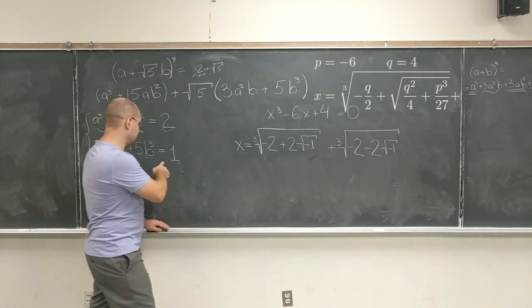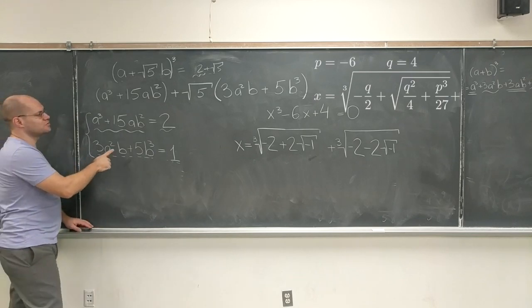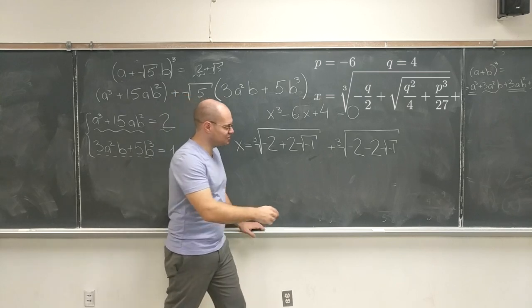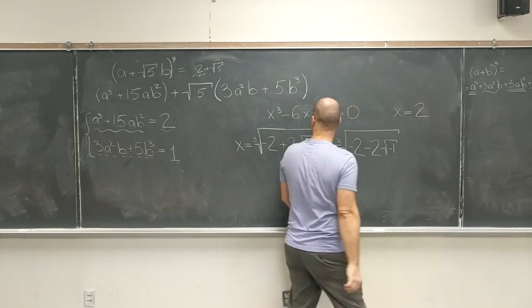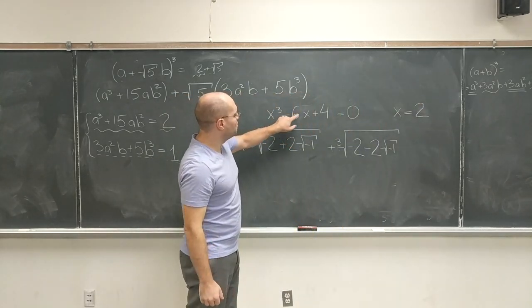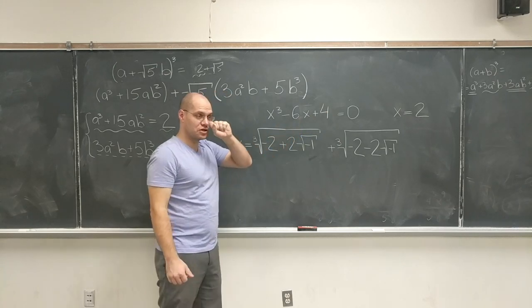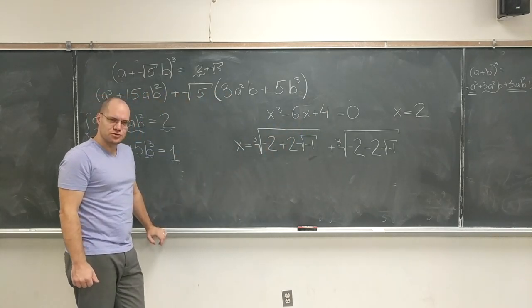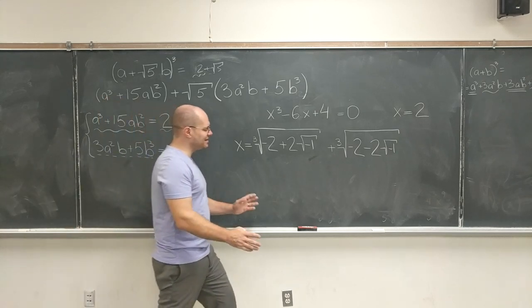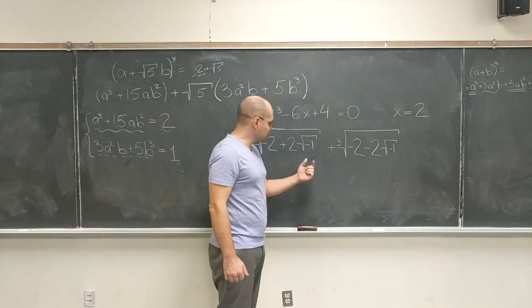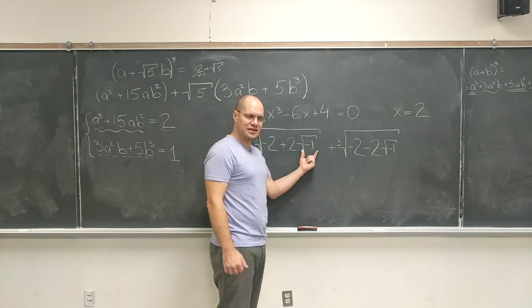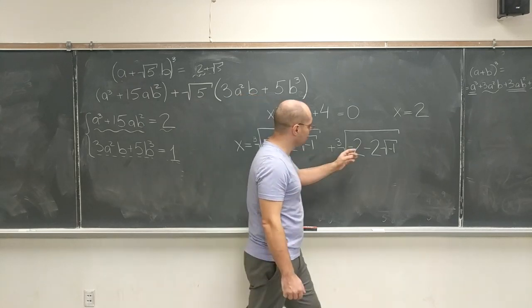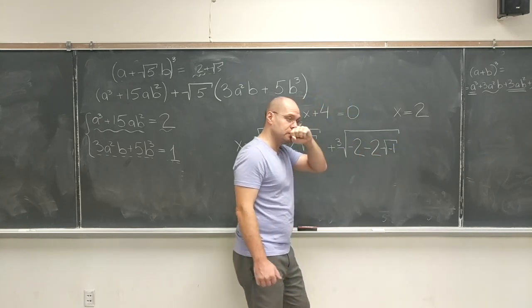But there is a root. Where is my equation? Here. This equation has a root of 2. Let's document that: 8 minus 12 plus 4. So there is a root. So it's not the same situation that we encounter in quadratic equations where the square root of a negative number signals that there are no solutions. It looks like it, except there are solutions. So what do you do?